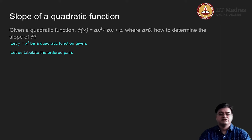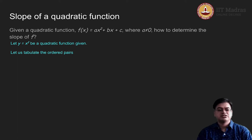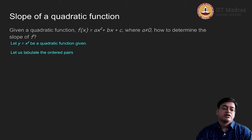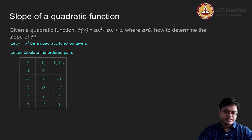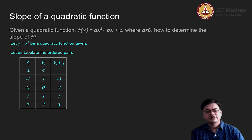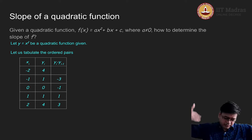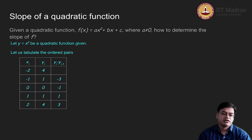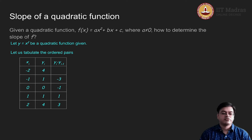First we need to plot this function. For plotting the function, we know the axis of symmetry — since b is 0, the y-axis is the axis of symmetry and the curve will be symmetric about the y-axis. The minimum value will be 0. So I have taken the symmetric points minus 2, minus 1, 0, 1, 2 and evaluated the ordered pairs: 4, 1, 0, 1, 4. The symmetry is clearly visible.